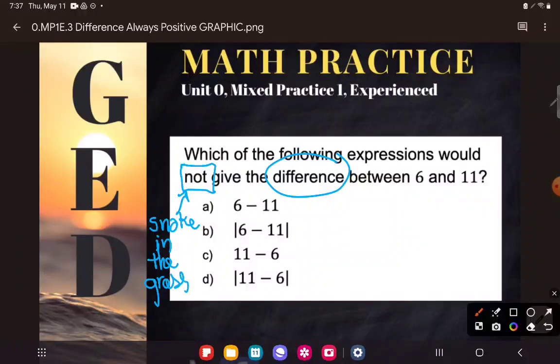So it doesn't say which of the following expressions would give the difference. It says which of the following expressions would not give the difference. That means that there's a bunch of right ways and only one wrong way.